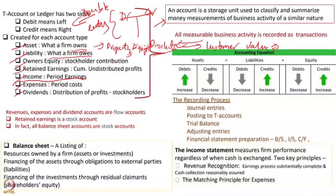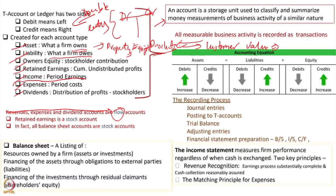Dividends are a particular form of distribution of profits — the difference between income and expenses — to stockholders. Revenues, expenses, and dividends all have a particular characteristic: they are flow accounts, meaning they are temporary in nature. Their balances are accumulated for a period — usually three months, one month, or any period you set up — and after that period they are closed out. They move into retained earnings as a stock account. The difference between revenues and expenses is income.